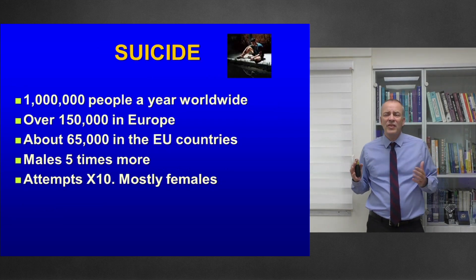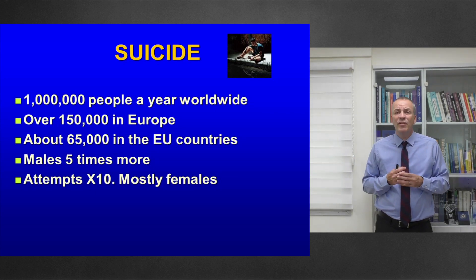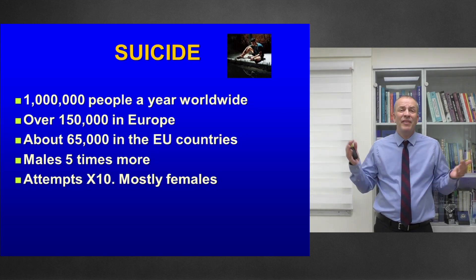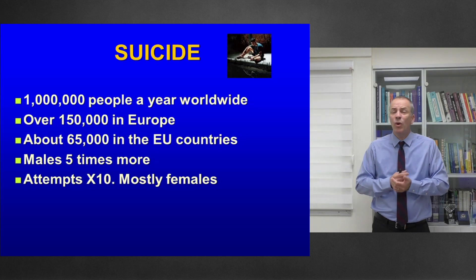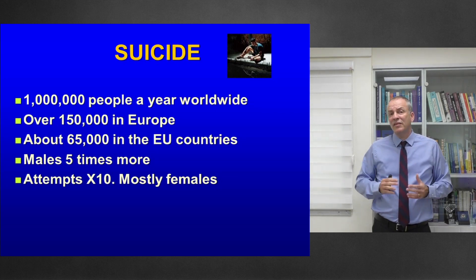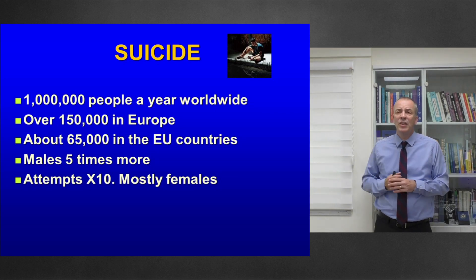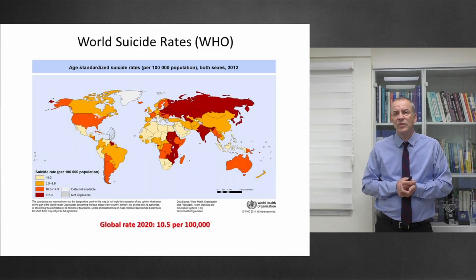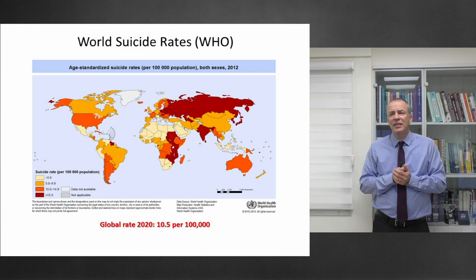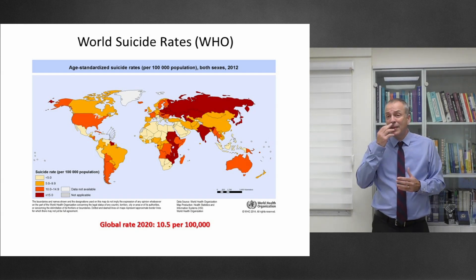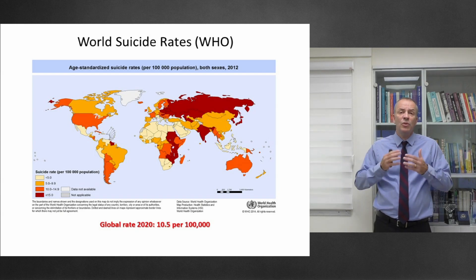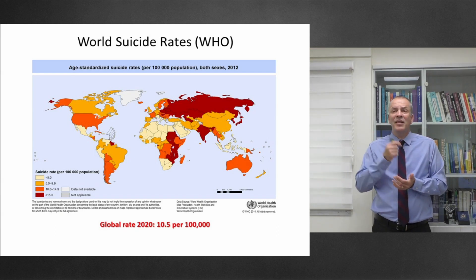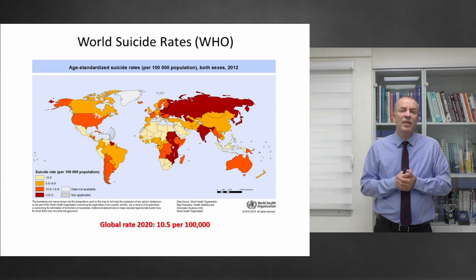When we look at the statistics of suicide, every year almost a million people die by suicide, over 150,000 in Europe itself, and 65,000 in European Union countries. Males die by suicide five times more than females all over the world except China. Attempting suicide is much more common — 10 to 20 times more — and it's mostly females. Looking at the world map, the darker the color, the more suicides per 100,000. Northern Europe and Russia can reach 20 to 30 per 100,000, while the Sahara Desert or Mediterranean regions have single-digit numbers.